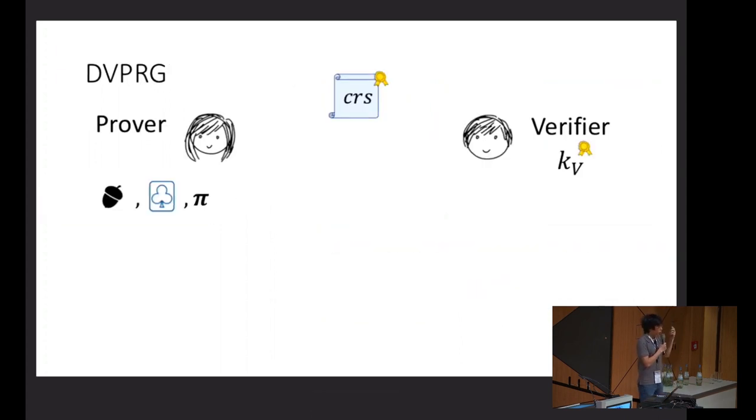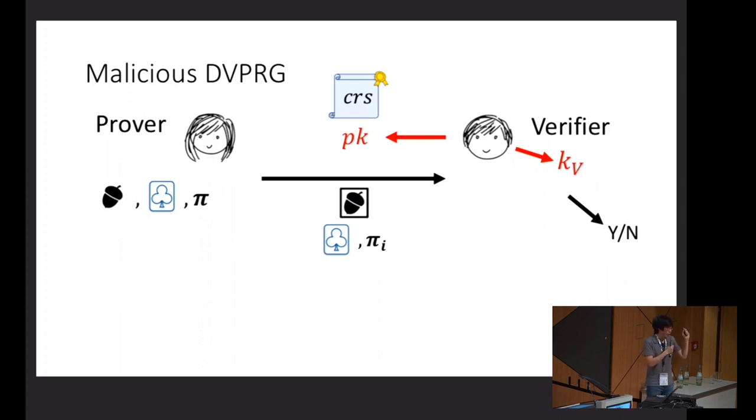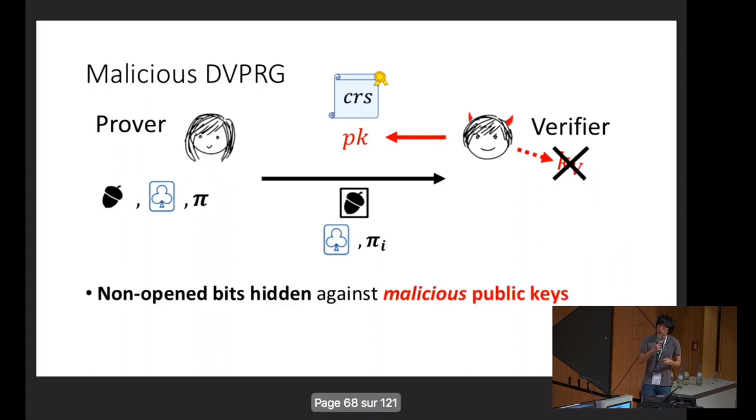Recall how do we use a DV-PRG to implement a NIZK. The prover chooses a seed. The seed, along with the CRS, defines many random bits. The prover will also generate proofs that bits are generated correctly. To implement the hidden bits, the prover will simply send a short commitment to the seed, along with hidden bits, and local proofs that those bits are generated honestly. This translates directly into the malicious flavor, where the verifier now picks himself his key and publishes a public key in the sky.